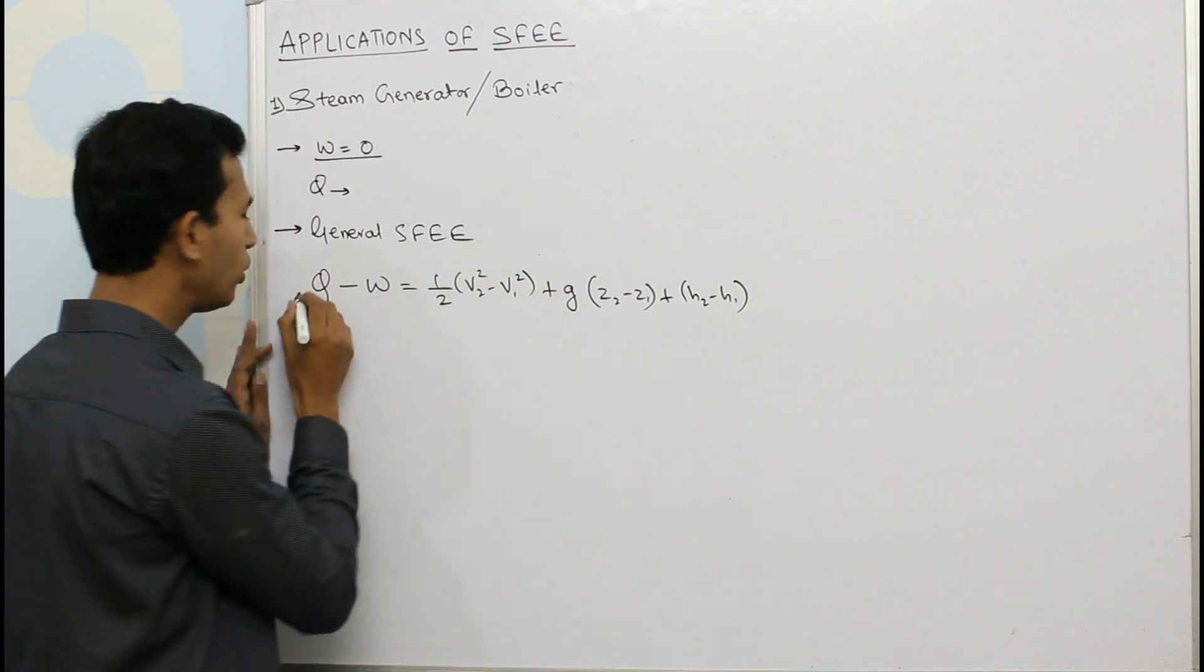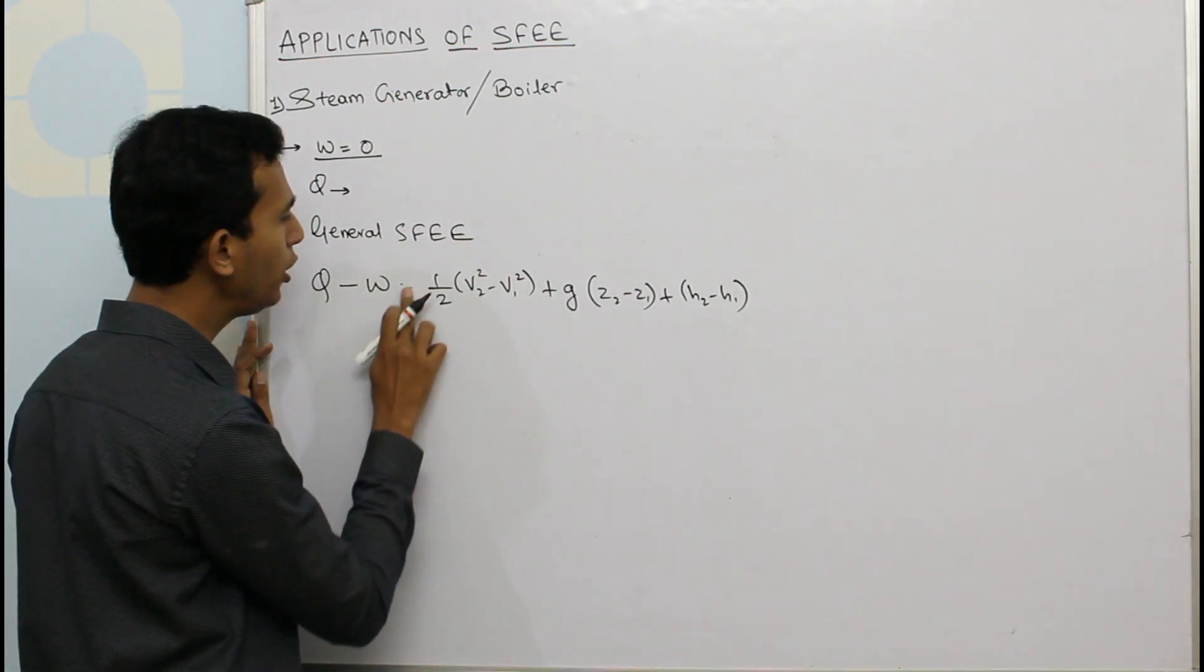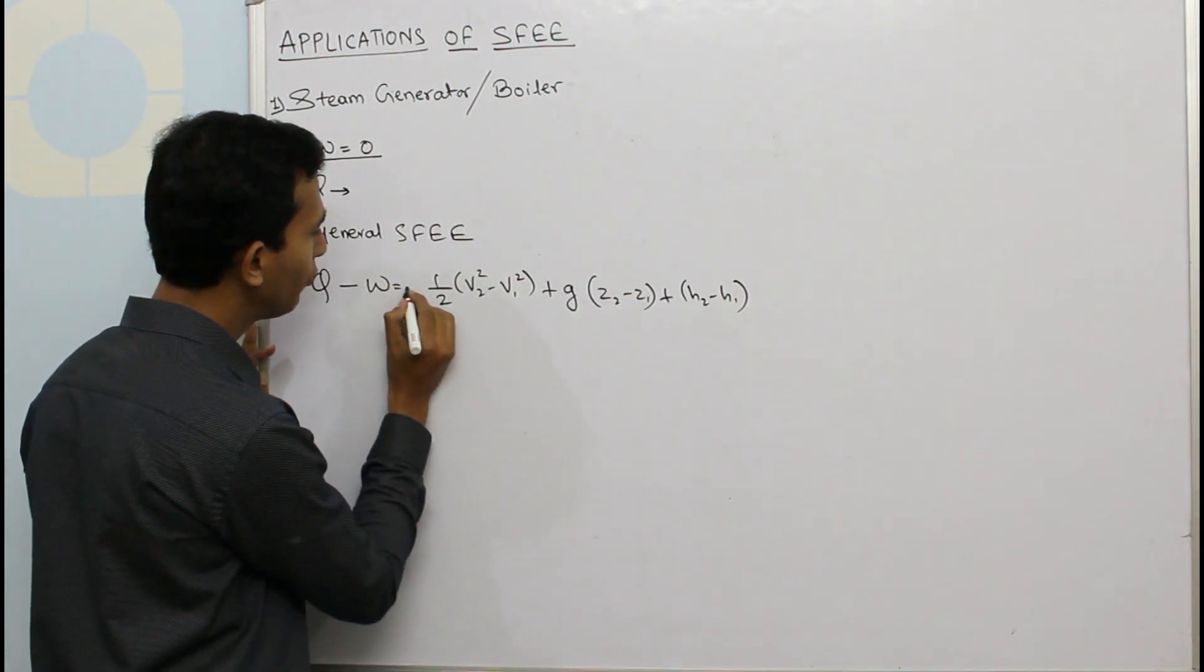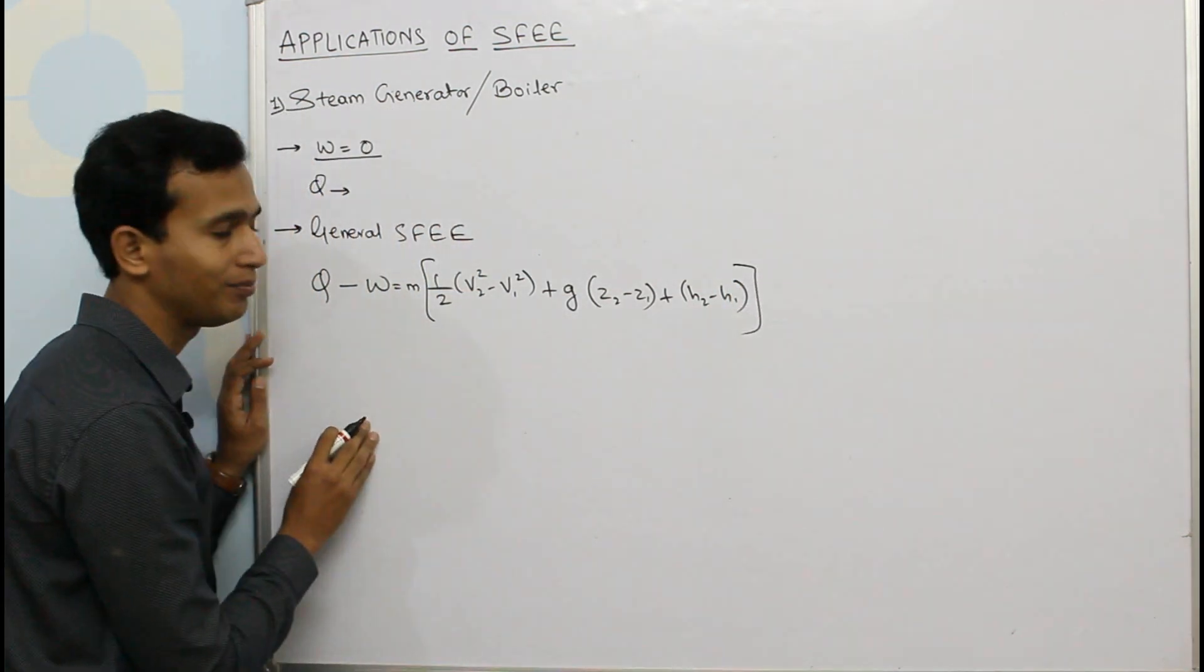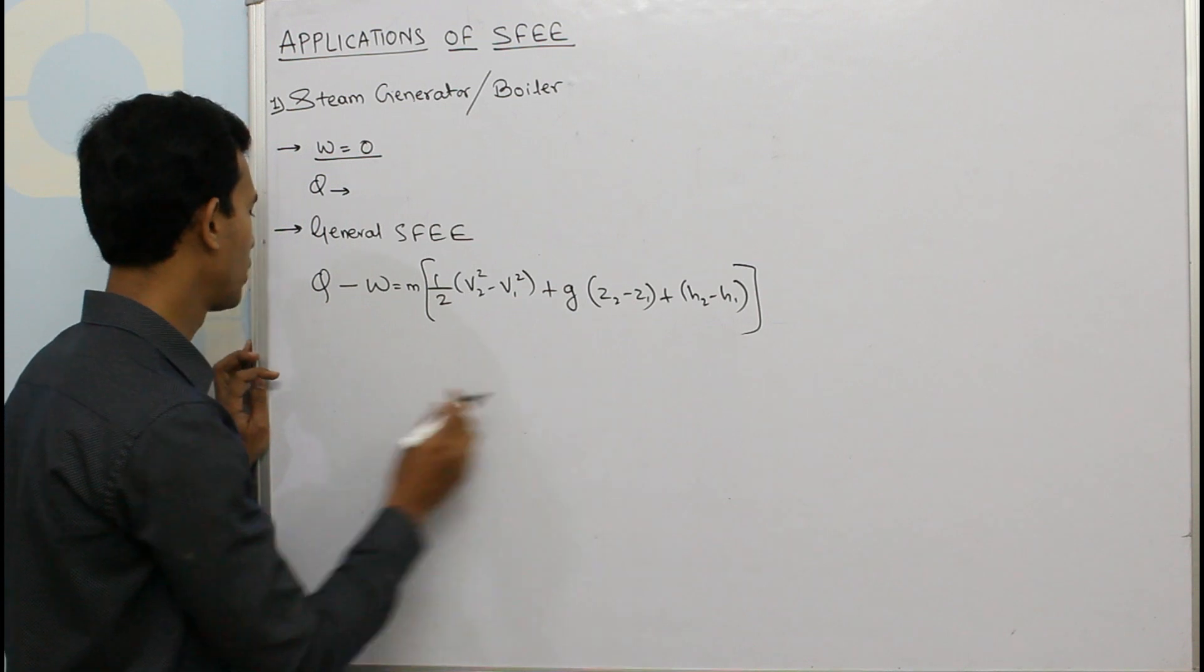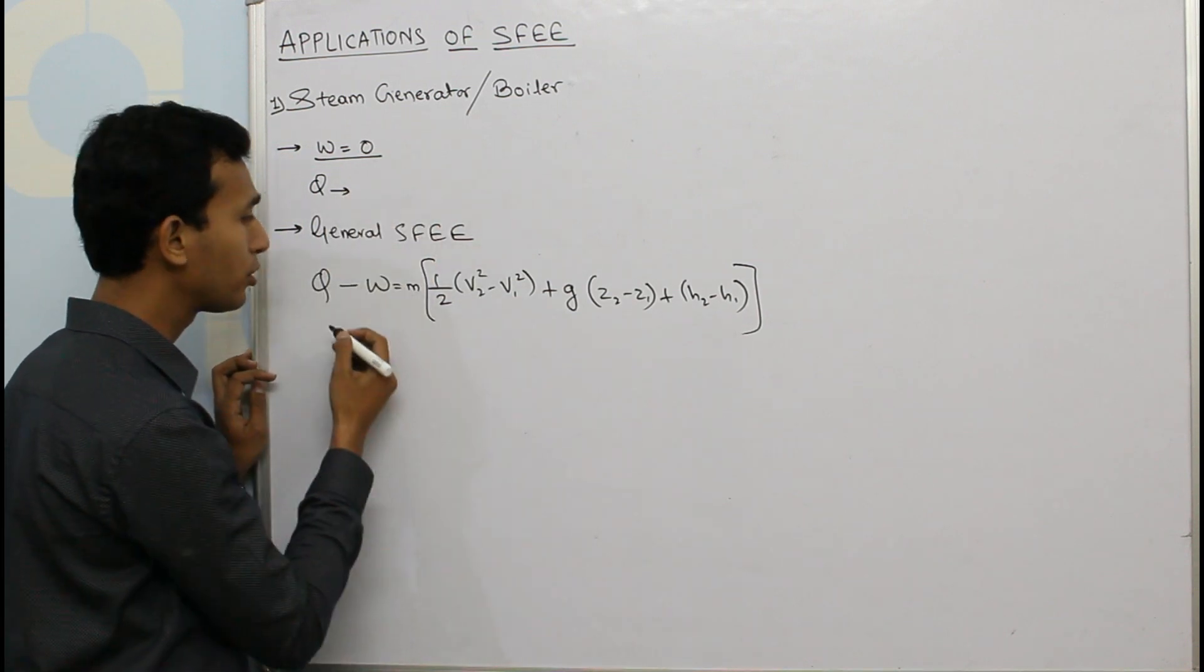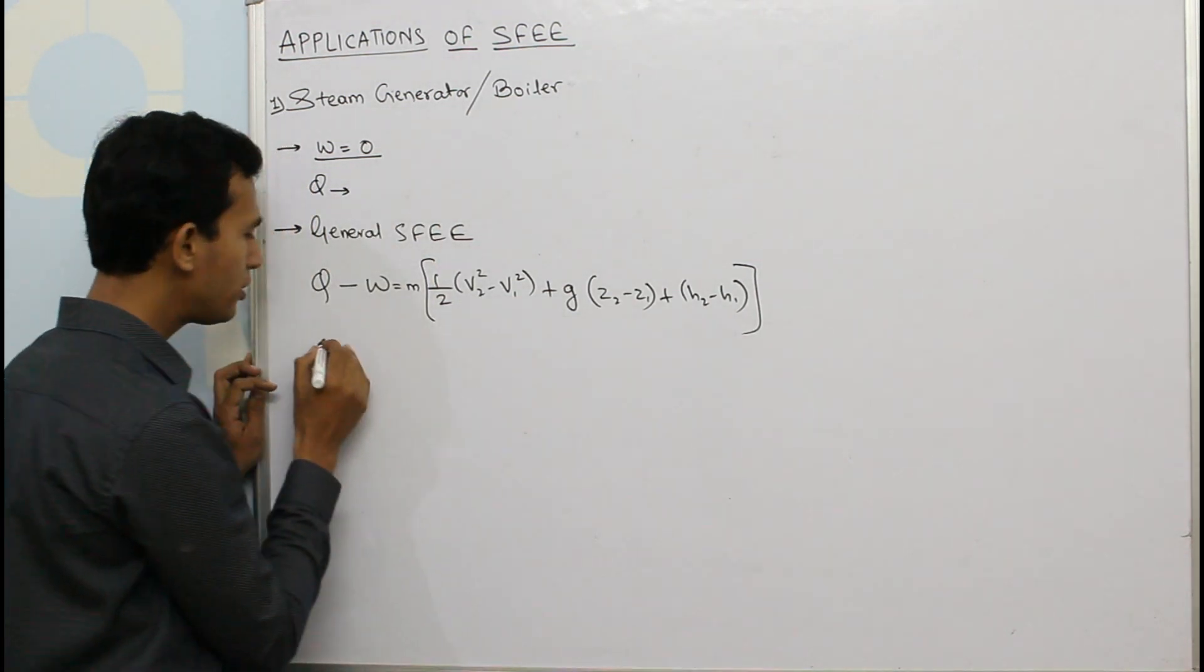If you want to have it for m kg of mass, so this is the equation. Now here we all know W is zero, so substituting in the equation we get...